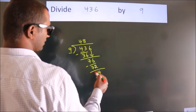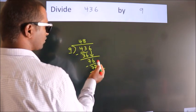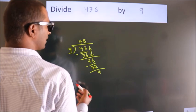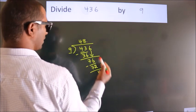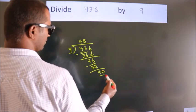After this, no more numbers to bring down. So what we do is, we put a dot and take 0. So 40.